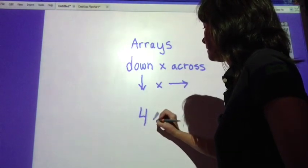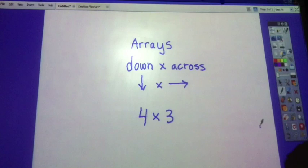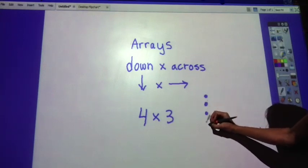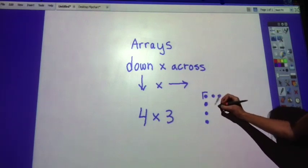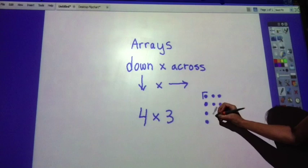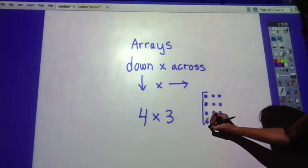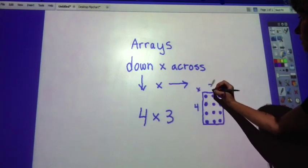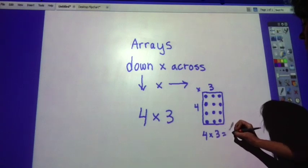4 times 3. If you went 1, 2, 3, 4 times 1, 2, 3 across and filled them in, get my rectangle form: 4 times 3. 4 times 3 equals 12.